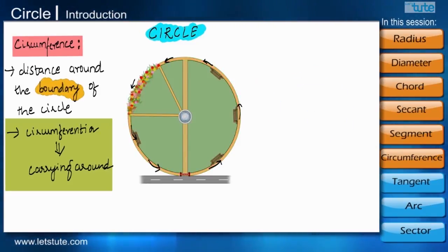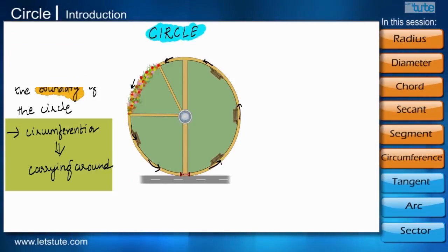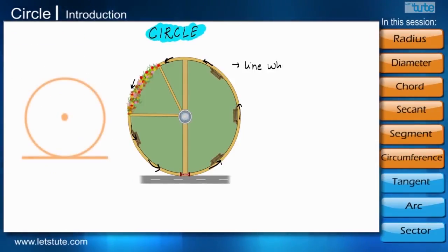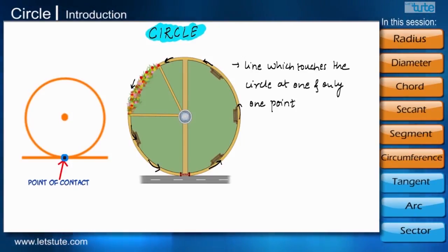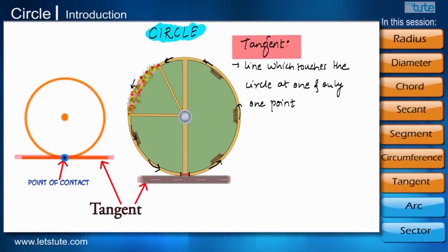If you noticed, the road in front of the park touches the park only at the entrance gate of the park. So, if there is a line which touches the circle at one and only one point, then it will be called as a tangent to the circle.